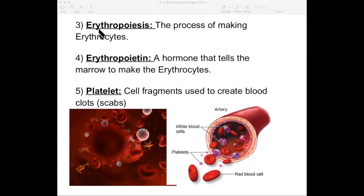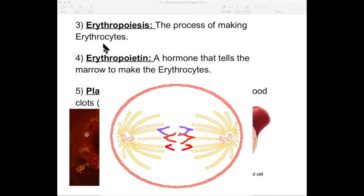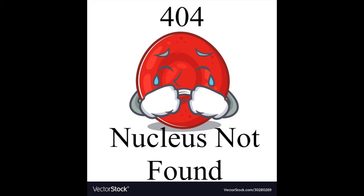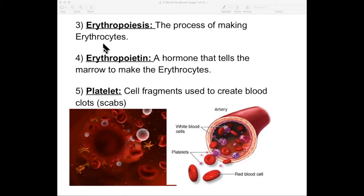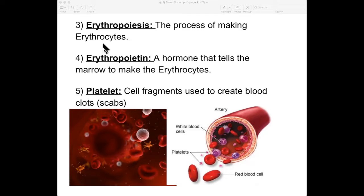The next couple of words also have erythro in them because they have to do with your red cells. Erythropoiesis — that is very difficult to say, and I am not going to require you to pronounce it, but I am going to require you to recognize it and know its definition. Erythropoiesis is the process of making red cells. Red blood cells don't have a nucleus, so they can't go through mitosis. Instead, they need to be made from scratch inside your bones — more specifically, the red marrow in your bones. Your red marrow is making red cells, and that is called erythropoiesis.